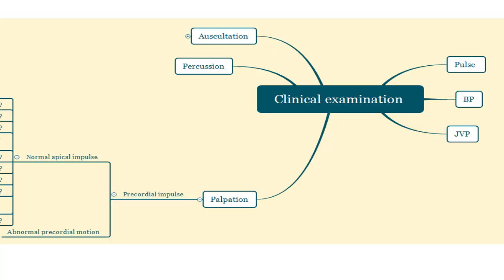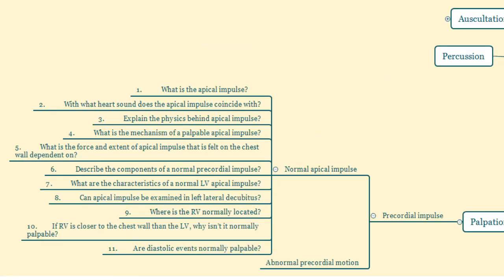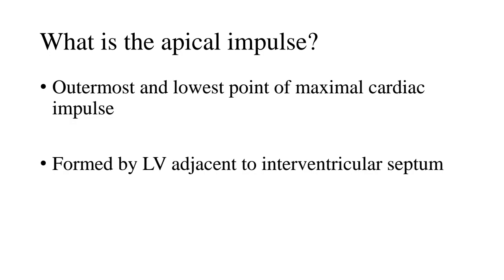Let's mind map about where we are today. We're going to be talking about clinical examination, under which we have palpation, which is really crucial and gives us a lot of clues. Under that we have the precordial impulse, and we'll be talking about the normal apical impulse today. For the purpose of active recall, I have prepared around 11 questions. I'd request you to pause this video and try to answer these questions — it's okay if you don't know the answers because we'll be tackling each one subsequently.